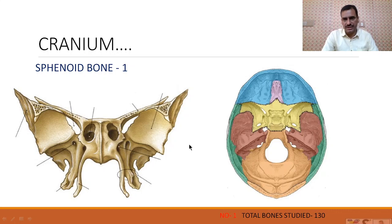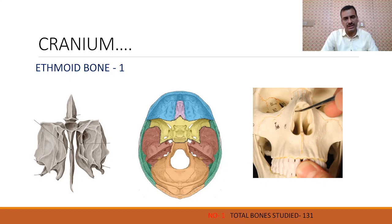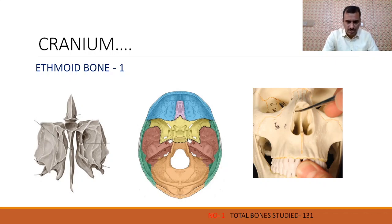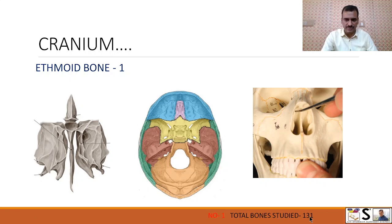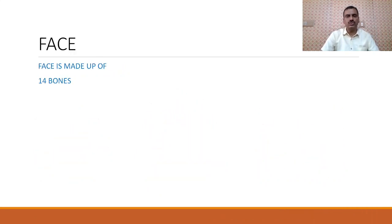Another bone of the cranium is the ethmoid bone. The ethmoid bone is a very fragile, very delicate bone and the type is irregular. This bone is in front of the sphenoid. Here you can see this is sphenoid and this is ethmoid — one part can be seen from inside the cranium, and other parts can be seen inside the nose. This is only one bone. So these were the eight bones which form the cranium.